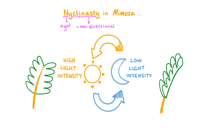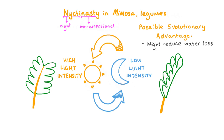Like thigmonasty, nyctinasty is a non-directional response. A similar process is observed in other plant leaves like those of legumes, drooping at night and returning to their upright position in the morning. The benefits of sleep movements are not fully understood, but one theory suggests that the drooping of leaves at night helps reduce the surface area of the plant to prevent excess water loss through transpiration. Sleep movements can also make a plant appear smaller or wilted at night, which may deter herbivores from eating these plants.